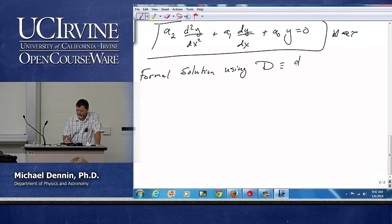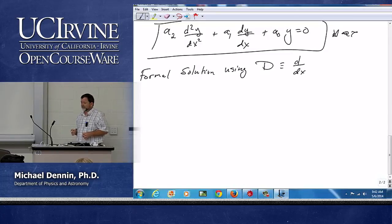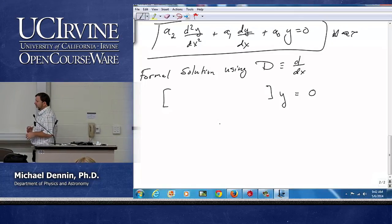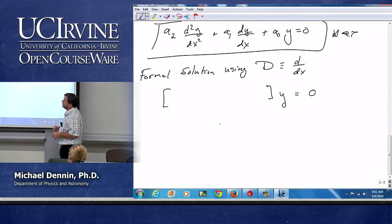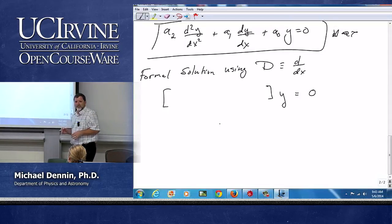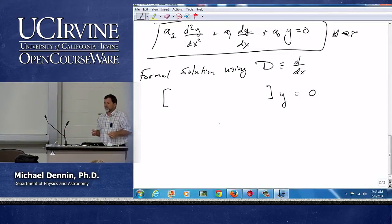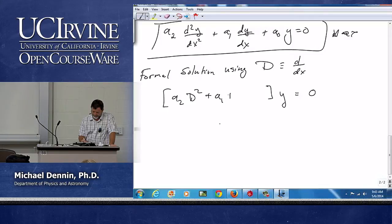So we'll talk about the linear operator D, which we define as D by DX in this case. So if we do that, how might you write this equation? Take just 30 seconds, rewrite this equation in terms of some expression involving D times Y equal to zero. Anyone want to tell me what they got? A2D squared plus A1D plus A0. Perfect.